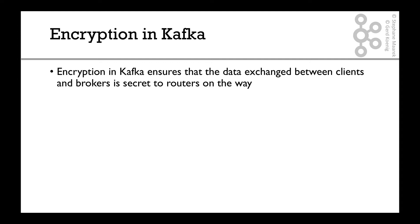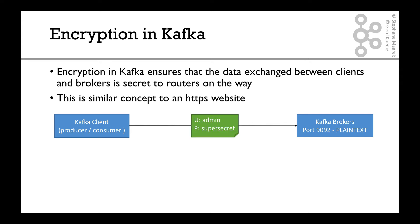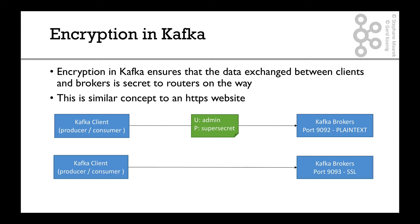Encryption in Kafka will ensure that the data exchanged between your clients and your brokers will remain secret to any router on the way — routers being computers routing your packets. This is very similar to what you do when you connect to an HTTPS website. Currently, a Kafka client sends data to brokers in plain text; if you send a username and password, the network would see it. When we have encryption, that data will be encrypted and only readable by the client and the broker, so any router will not be able to intercept it.